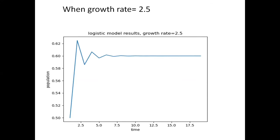With r between 2 and 3, the population will also eventually approach the equilibrium value, but will fluctuate around the equilibrium value for some time. So here it is fluctuating about this equilibrium value.